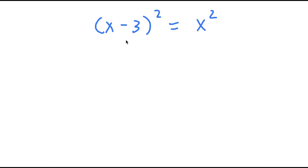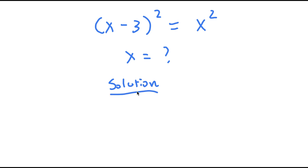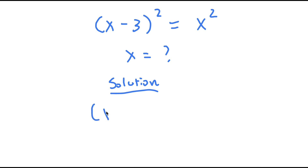In this problem, I have x minus 3 squared is equal to x squared. So to solve this, I want to find the value of x. For my solution, I'll first start with x minus 3 squared is equal to x squared.